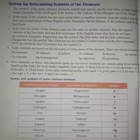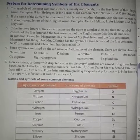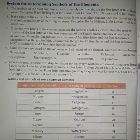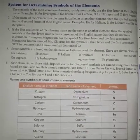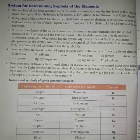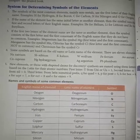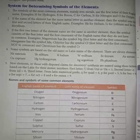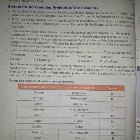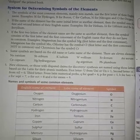Some symbols are based on the old name or Latin name of the element. There are 11 such elements: Na from Natrium (sodium), Sb from Stibium, K from Kalium, W from Wolfram, Fe from Ferrum (iron), Au from Aurum (gold), Cu from Cuprum (copper), Hg from Hydrargyrum, Ag from Argentum (silver), and Pb from Plumbum (lead).